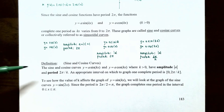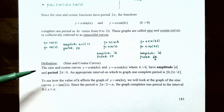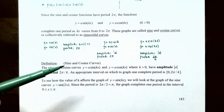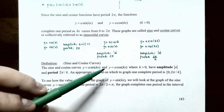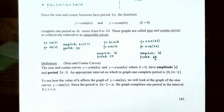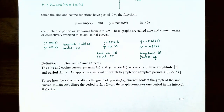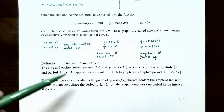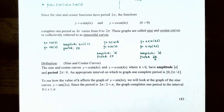So the formal definition: for the sine and cosine curves y = a·sin(kx) or y = a·cos(kx), where k is a positive number, the amplitude is |a| and the period is 2π/k. An appropriate interval on which the graph will complete one period is the closed interval from 0 to 2π/k.